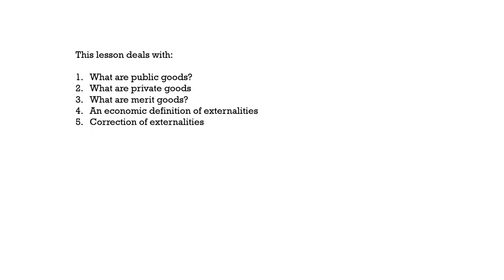Keeping this in the backdrop, in this lesson we will study about what are public goods, what are private goods, what are merit goods, and how do we distinguish all of them from each other. We will also look at an economic definition of externalities. So far in the course, we have been talking about information asymmetry and externalities in the health and education sector. However, we have not had an opportunity yet to go into the economics of how we depict the problem of externalities and how they are corrected in the economy.